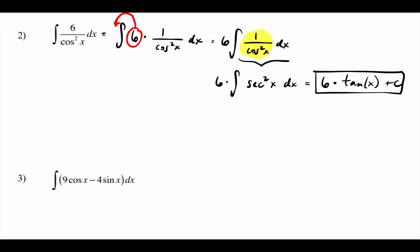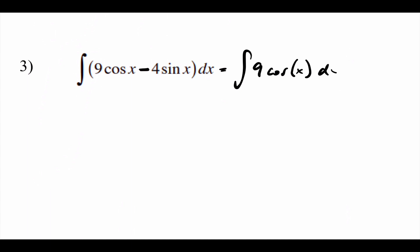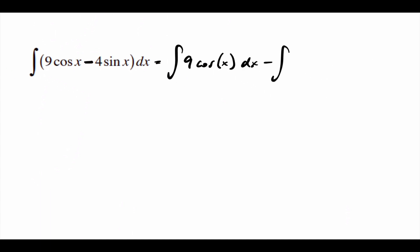Number three has a minus in the middle, so you can separate them: the integral of nine cosine of x minus four sine of x dx, broken into two smaller problems. You don't have to, but you can break them up — and those two problems look like the ones we just did.